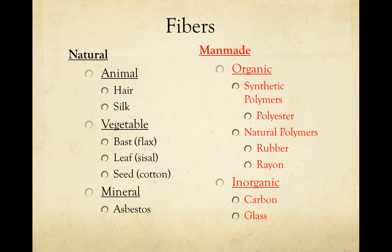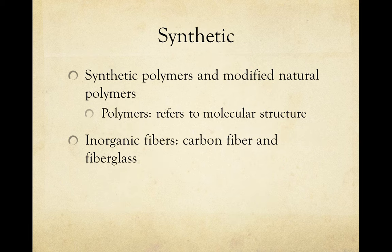Now we're moving on to the man-made or synthetic fibers — the other general division of fibers. These are organized into organic and inorganic, and the organic ones are further categorized into synthetic and natural polymers. Man-made or synthetic fibers can be broken down into three categories: synthetic polymers, modified natural polymers, and inorganic fibers.